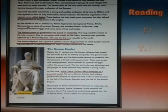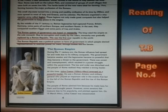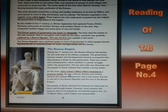Students, now highlight the important points on page 4 of the textbook. The highlighted points include: Legion, Monarchy, Roman Republic, and Julius Caesar, who was considered a powerful leader.